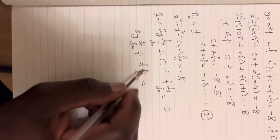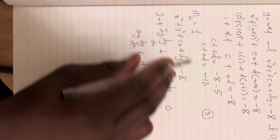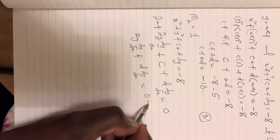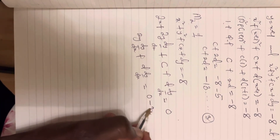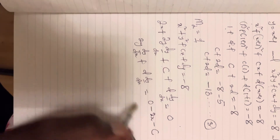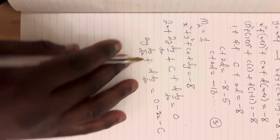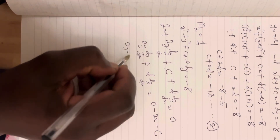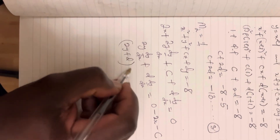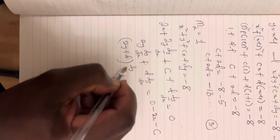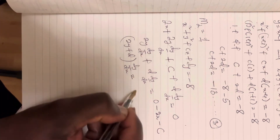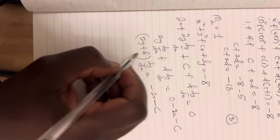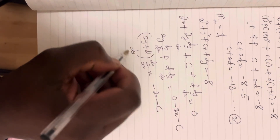Collecting like terms: 2y·(dy/dx) + d·(dy/dx) = -2x - c. Factoring out dy/dx: (2y + d)·(dy/dx) = -2x - c.